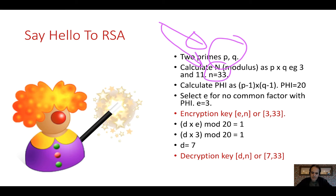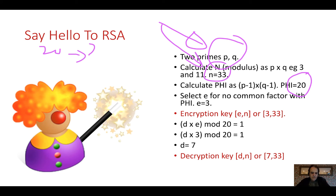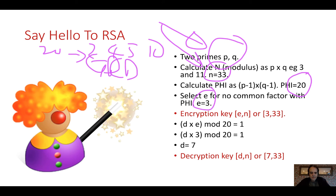The reason for that is we can calculate what's called phi: phi is P minus 1 times Q minus 1. In this case, that's 2 times 10, or 20. Our encryption key E must not share a common factor with phi. So 20 factorises to 2, 4, 5, 10 and so on — we can't choose any of those values. Let's choose the value of 3. The GCD between phi and E must be 1.